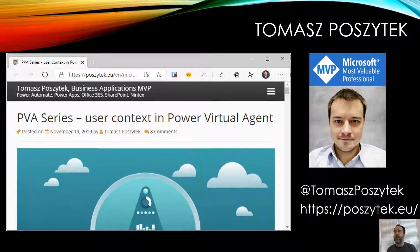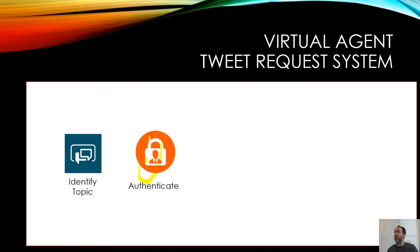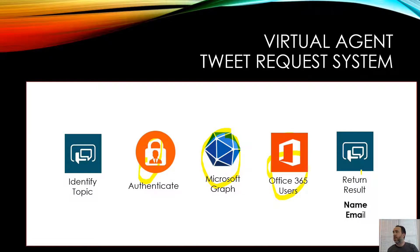It involves a lot of Azure AD, and I thought for people less familiar with Azure AD, seeing it walked through might be helpful. So what we're going to do is: once Power Virtual Agents identifies the topic, we authenticate the user. Once the person is authenticated, we get their identity through Microsoft Graph. We pass the authentication token into Microsoft Graph, get their UPN, pass that into Office 365 Users, and at that point we have access to their name, their email, we can look up their manager, and all sorts of things. In this case we're going to return their name to personalize the response, and their email to confirm where to send a transcript of the conversation.